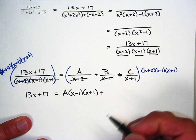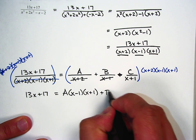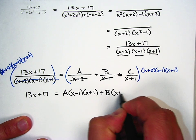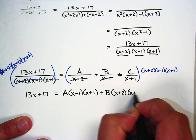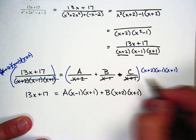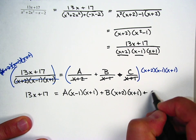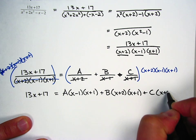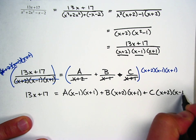This x minus 1 cancels with the middle x minus 1, leaves me with B times x plus 2, x plus 1. And then the x plus 1 cancels with the x plus 1, leaving me with C times x plus 2, x minus 1.